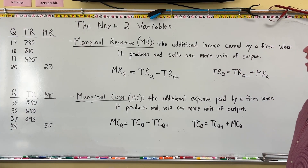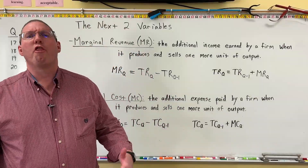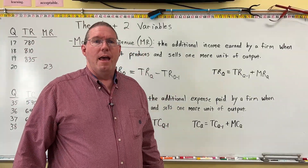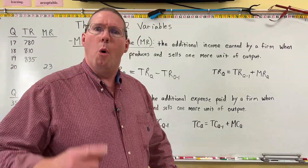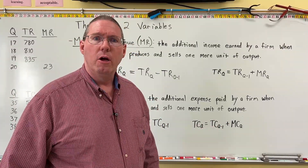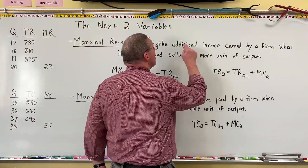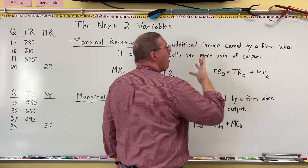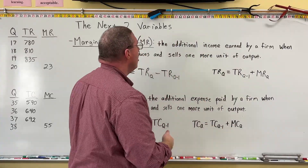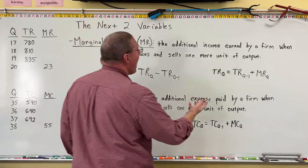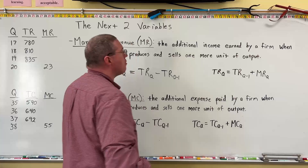When the firm decides to make just one more — let's say they're currently making 130 cheeseburgers, and now they decide: what if we made 131 cheeseburgers? What if we made one more cheeseburger? What would happen to our revenues? What would happen to our total revenue? What would be the additional total revenue — what would our total revenue go up by? That's what's added to total revenue when we produce and sell one more cheeseburger.